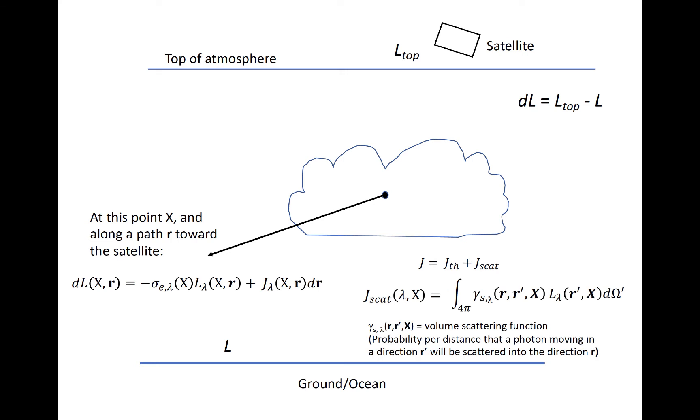The source associated with scattering looks a bit more complicated. It is a function of the radiance at point X moving in any direction r prime. The direction r, remember, is the path toward the satellite. Gamma is just a scattering phase function that incorporates the probability of radiation traveling in direction r prime getting scattered into the direction r. Then we integrate over 4 pi steradians, the solid angle subtended by a sphere surrounding point X, through all directions r prime, which is collectively denoted as uppercase omega prime.